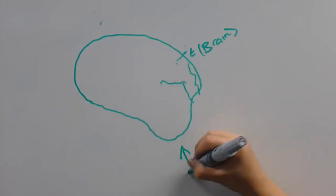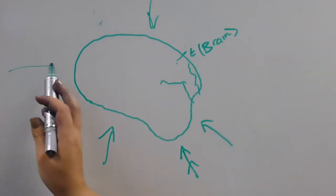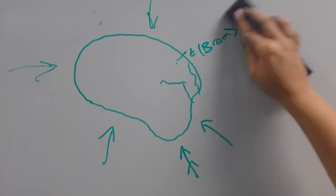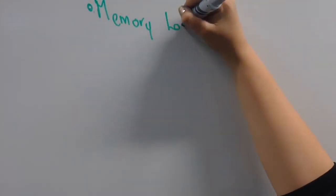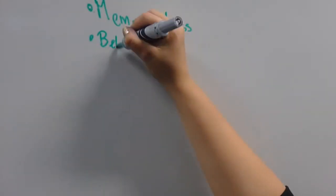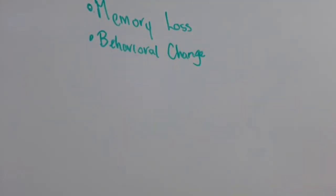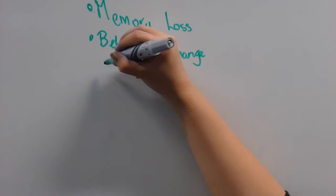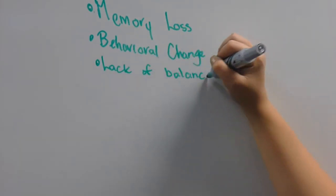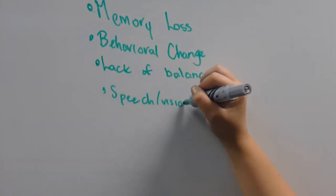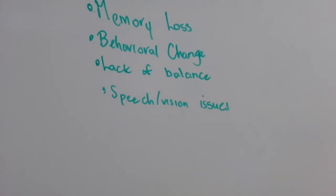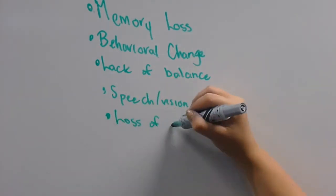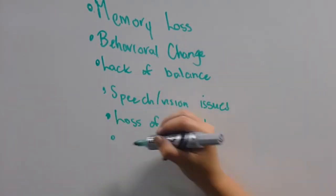CJD affects many different areas in the brain, meaning it can lead to a wide variety of symptoms that can make the disease difficult to place as it may mimic other illnesses. Symptoms can generally include memory loss, character-specific behavioral changes, lack of balance and coordination, speech and vision issues, jerky movements, difficulty swallowing, insomnia, hallucinations, and progressive loss of mobility and brain function.